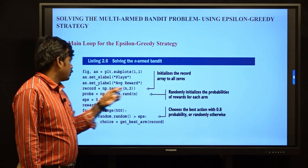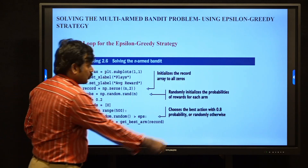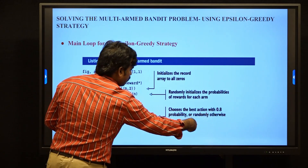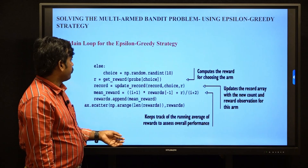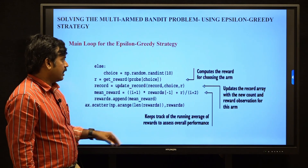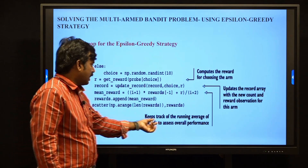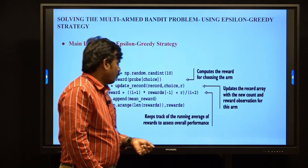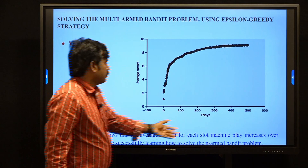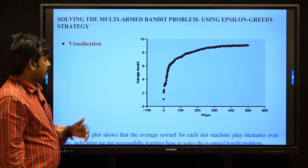In summary, the program initializes the record array to all zeros and randomly initializes the probabilities or rewards for each arm using a random function. We choose the best action with 0.8 probability (since epsilon is 0.2, giving 0.8 for exploitation). We compute the reward R for the chosen arm, update the record array with the new count and reward, and keep track of the running average of rewards to assess overall performance. Visualization using matplotlib displays the average rewards over the number of attempts.